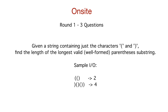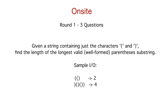The second question in round one was graph-based. An n×n chessboard is given and I have to find the shortest number of hops a knight needs to travel from position (x1, y1) to a target (x2, y2). It's quite simple because in an unweighted graph, BFS yields the shortest path — so that's what I did, and it was easy.